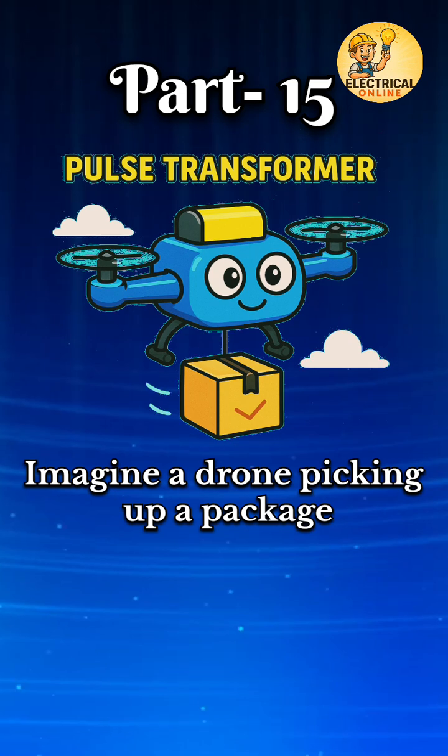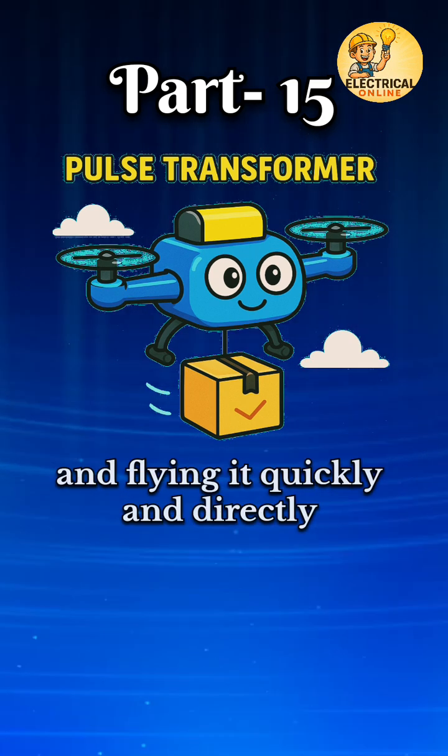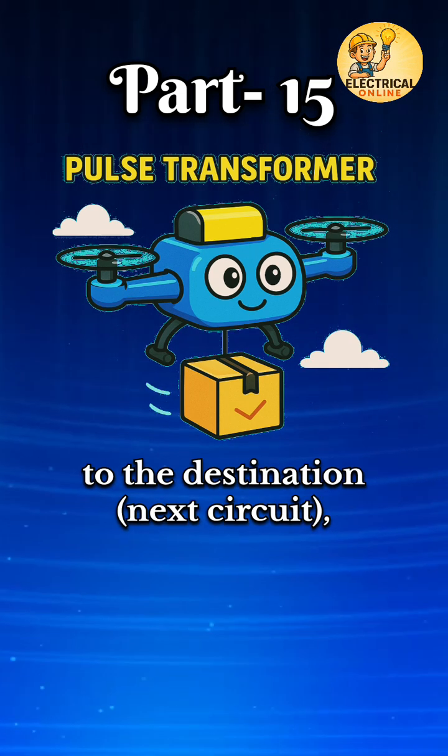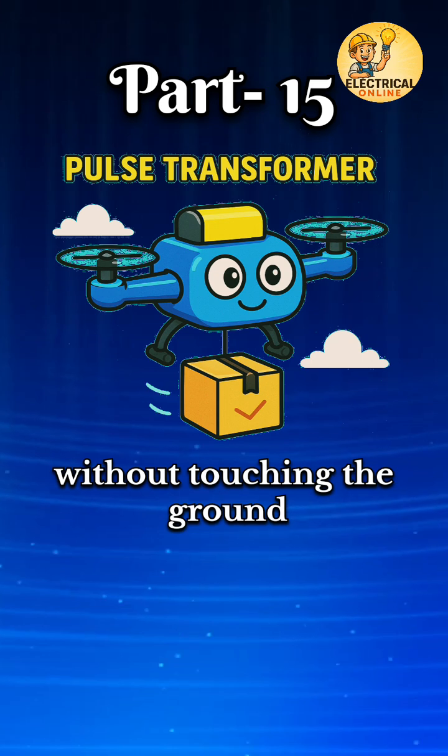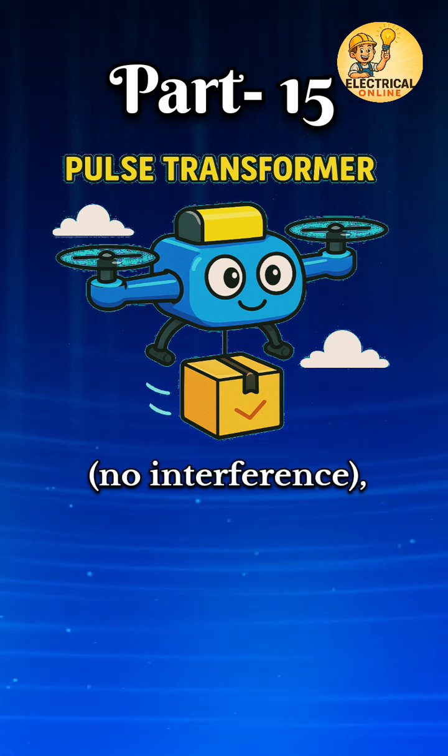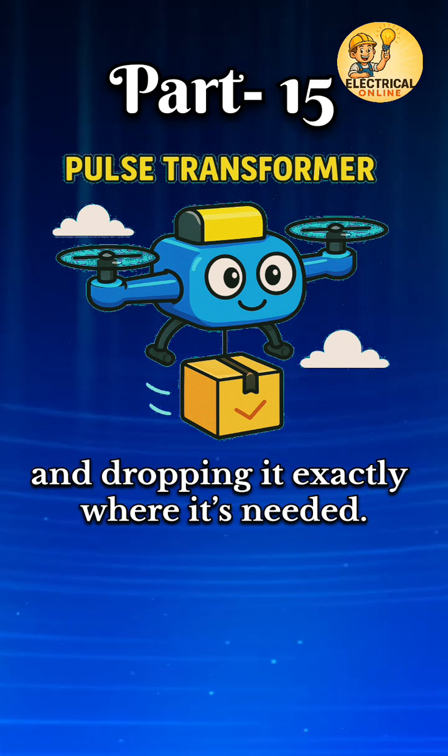Imagine a drone picking up a package (the electrical pulse) and flying it quickly and directly to the destination (the next circuit), without touching the ground (no interference), and dropping it exactly where it's needed.